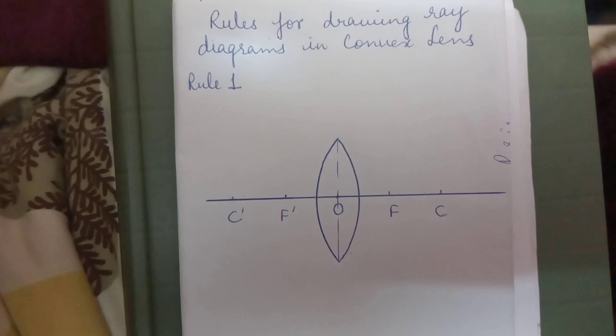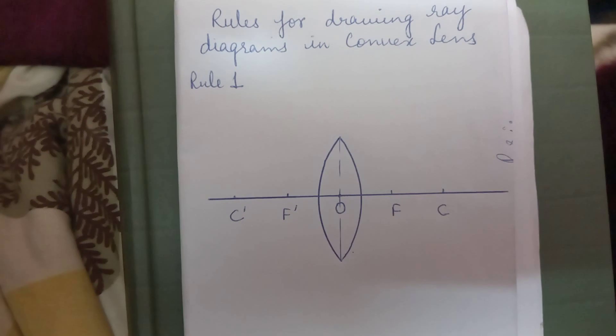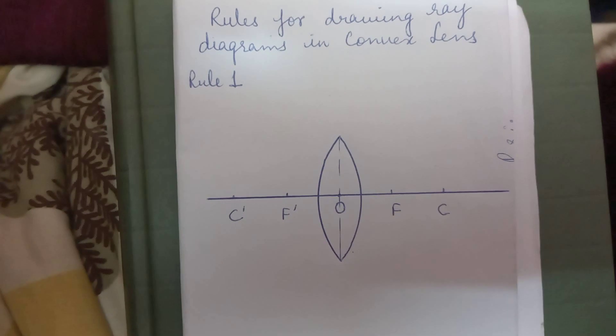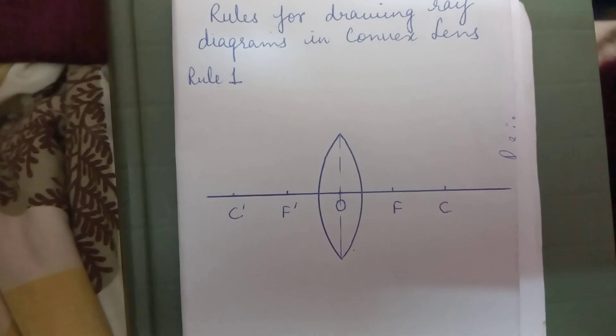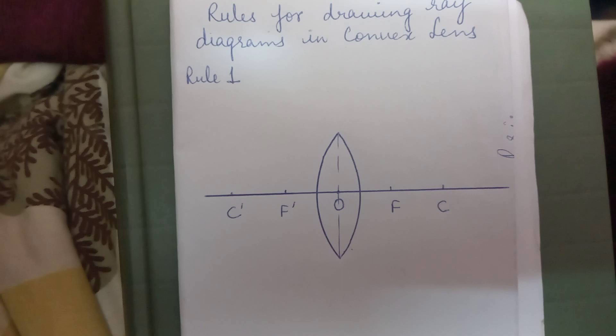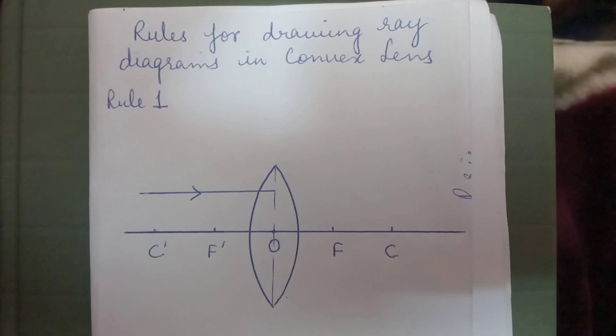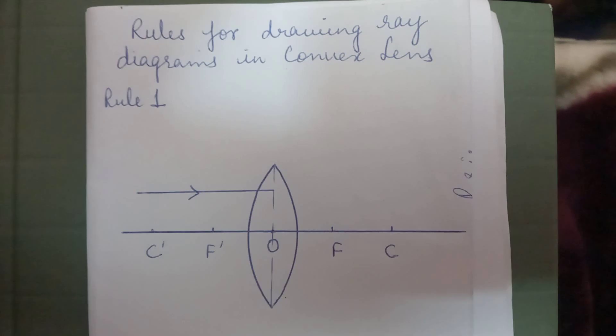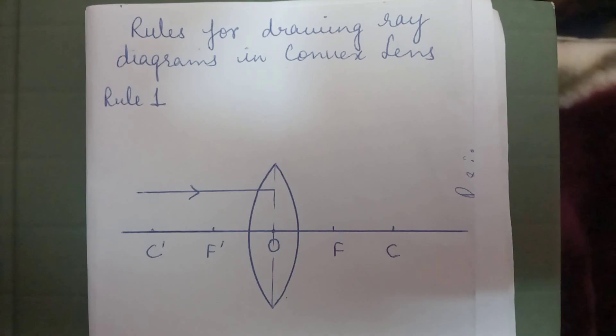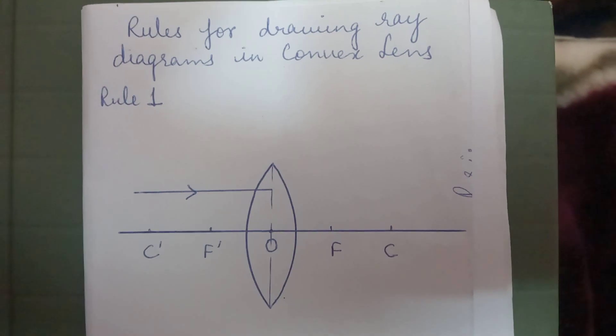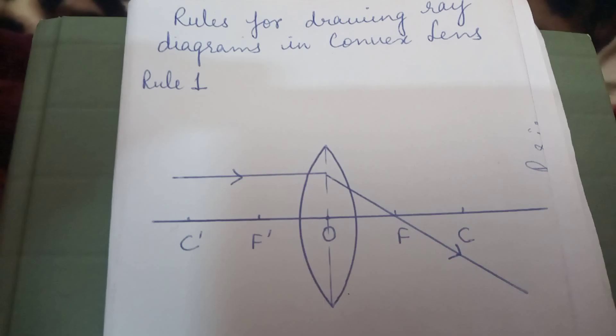Rules for drawing ray diagrams in a convex lens. Rule one: a ray parallel to the principal axis passes through the focus on the other side of the lens after refraction.